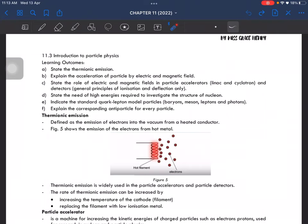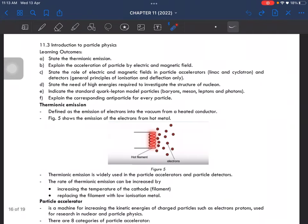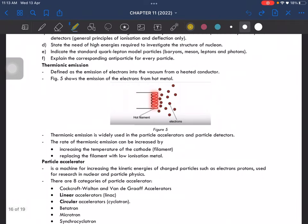If you don't feel like reading it, you can just skim through it. Thermionic emission is defined as the emission of electrons into the vacuum from a heated conductor, so this is the hot filament, and there will be an emission of electrons.